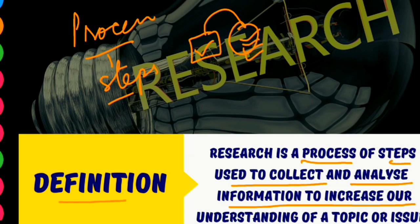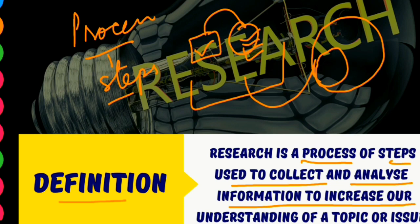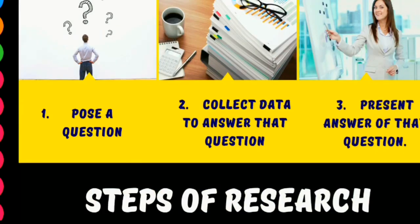When we analyze our data and existing knowledge, the area of our existing knowledge increases and enhances. At a general level, research has three steps. The first step is to pose a question — if you want to know about something through research, a question must arise in your mind. If you don't have any question, if you don't know what to find out, then you cannot do research.